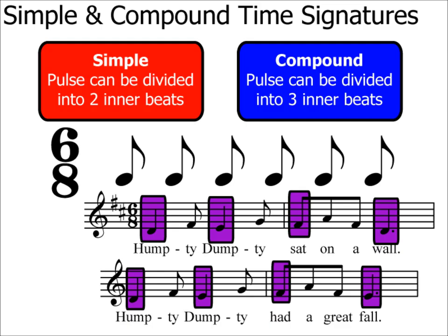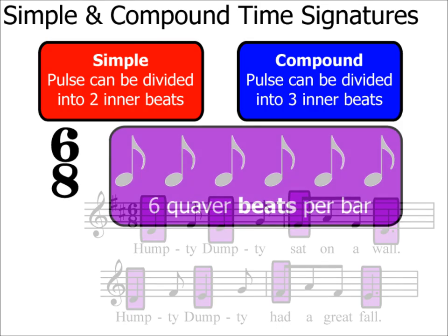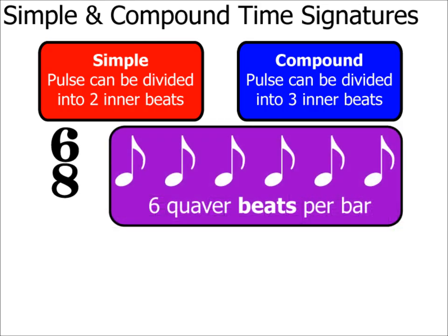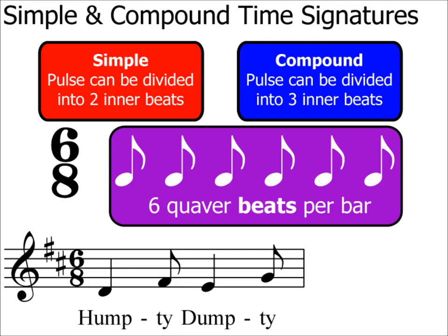If you did have a go at that, you probably tapped your feet on each of the highlighted notes. This is what we call the pulse — the feel of the music — and you can see that there are two pulses per bar. Even though the beat is six quavers, it would feel very odd if we tried to tap our feet to all six quavers in the bar. So although there are six quaver beats in each bar, there are actually two pulses in each bar in 6/8, and it's this pulse we use to determine whether the time signature is simple or compound.